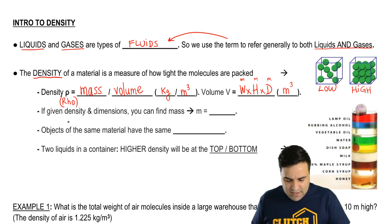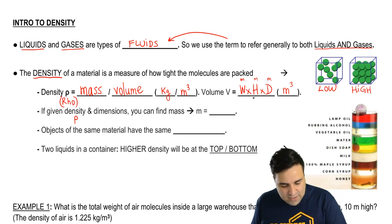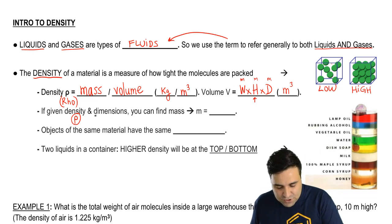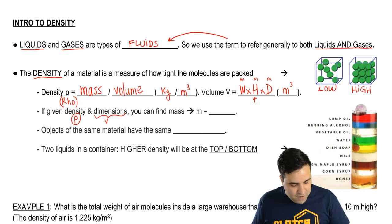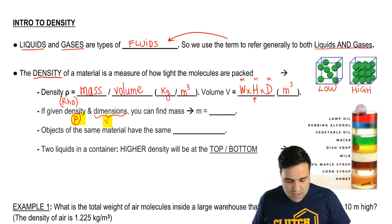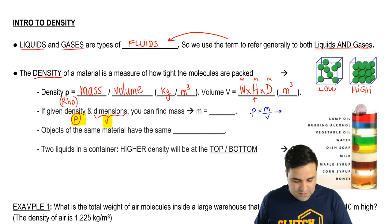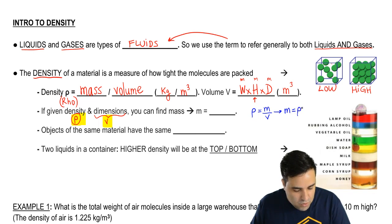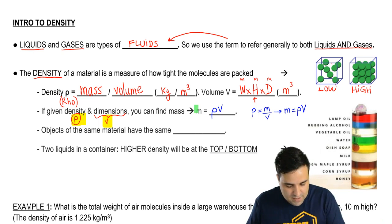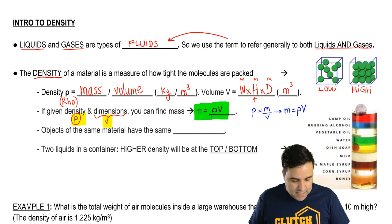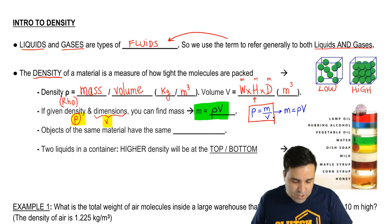Now, sometimes you are given the density and you're given these dimensions. So you're given density rho and you're given the three dimensions. Whenever you're given the three dimensions, you're able to find volume. And if you have rho and volume, then you're going to be able to find the mass. And that's because of the equation. Rho equals mass divided by volume. Therefore, if I move the V up here, I hope you see that right away, you get M equals rho volume. Mass equals rho volume. And they try to trick you with this, but it's very straightforward. It's just a play on this original definition here of density.